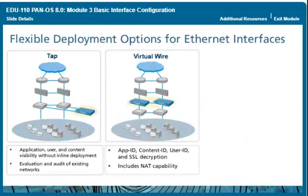Virtual Wire. With Virtual Wire interfaces, the firewall can be inserted into an existing topology without requiring any reallocation of network addresses or redesign of the network topology. In this mode, all of the protection and decryption features of the device can be used. NAT functionality is also provided in this mode.